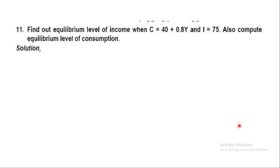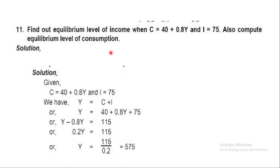Question 11: Find the equilibrium level of income when C = 40 + 0.8Y and I = 75; also compute the equilibrium level of consumption. Using Y = C + I: Y = 40 + 0.8Y + 75. So Y minus 0.8Y = 115, meaning 0.2Y = 115, therefore Y = 115 upon 0.2 = 575.